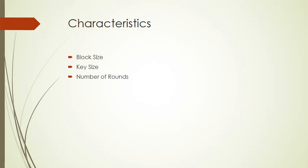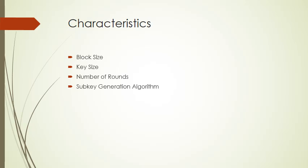Sub-key generation algorithm: greater complexity in this algorithm should lead to greater difficulty of cryptanalysis. Round function F: again, greater complexity generally means greater resistance to cryptanalysis.